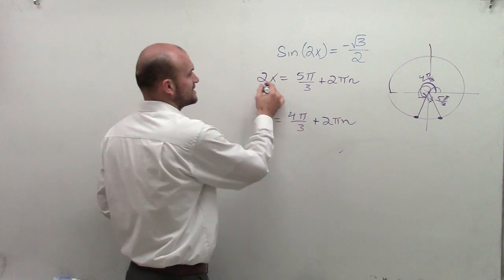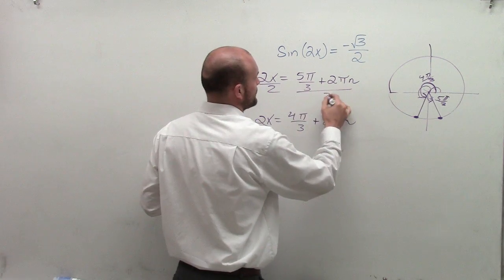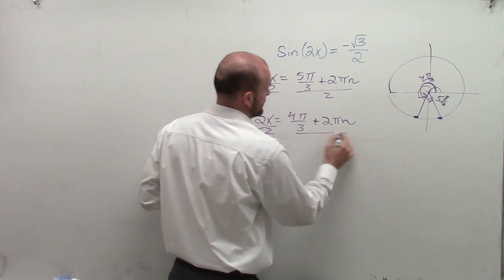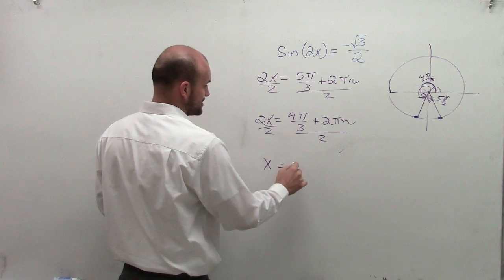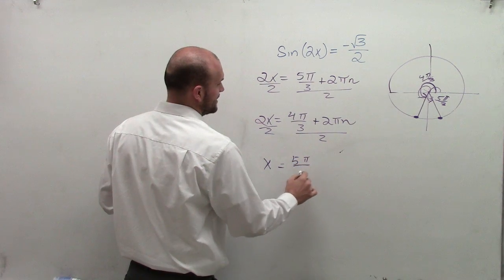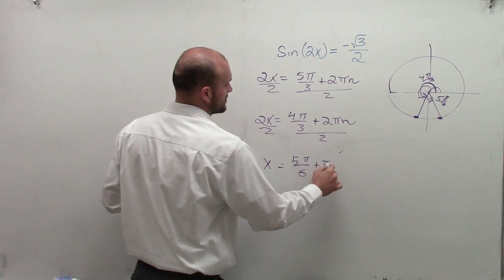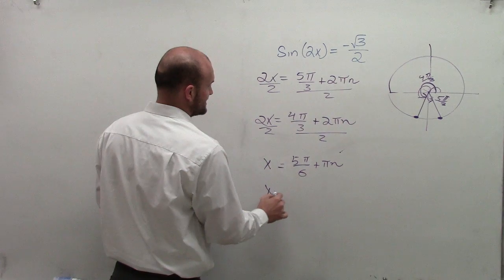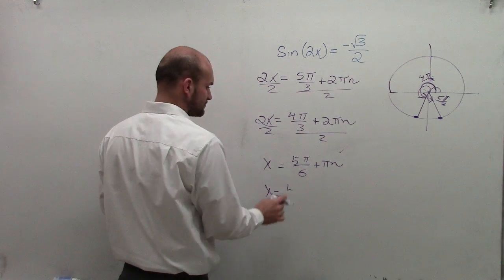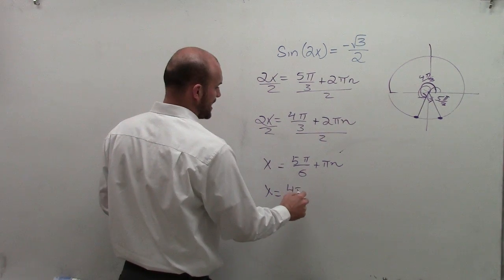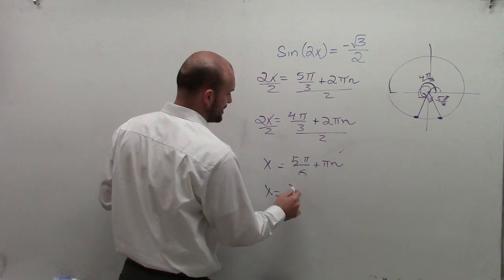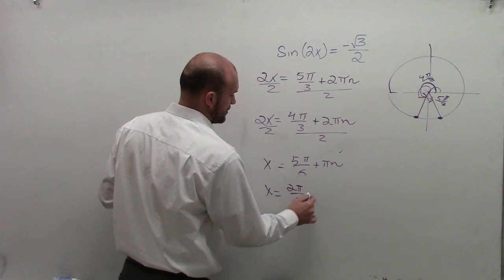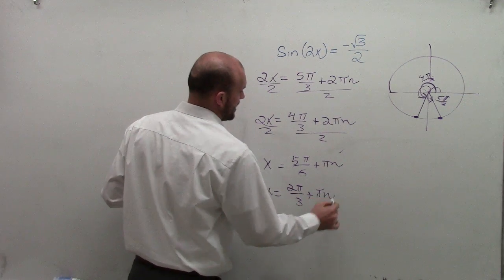So now to finally solve for x, what I'll do is I'll divide by 2 on both sides. And therefore, my final solutions are going to be x equals 5 pi over 6 plus pi n and x equals 4 pi divided by 6, which we can reduce to 2 pi over 3 plus pi n.